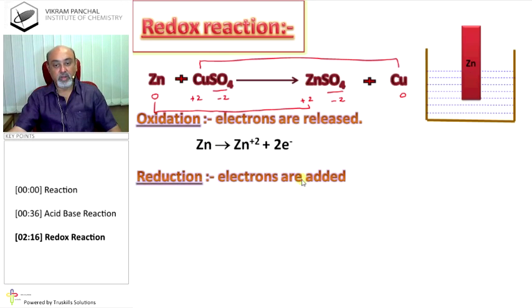Reduction. When electrons are added, it is called reduction. And here, copper plus 2 is reduced to copper. Oxidation number of copper on the left-hand side is plus 2. Right side is 0. So, when oxidation number decreases, it is known as reduction.